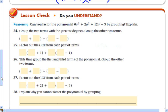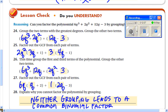And the last lesson check, can you factor the polynomial 6q³ + 2q² + 12q - 3 by grouping? Explain. Go ahead and try it. Follow the directions. Alright, that's the end of the lesson. I'll see you tomorrow.